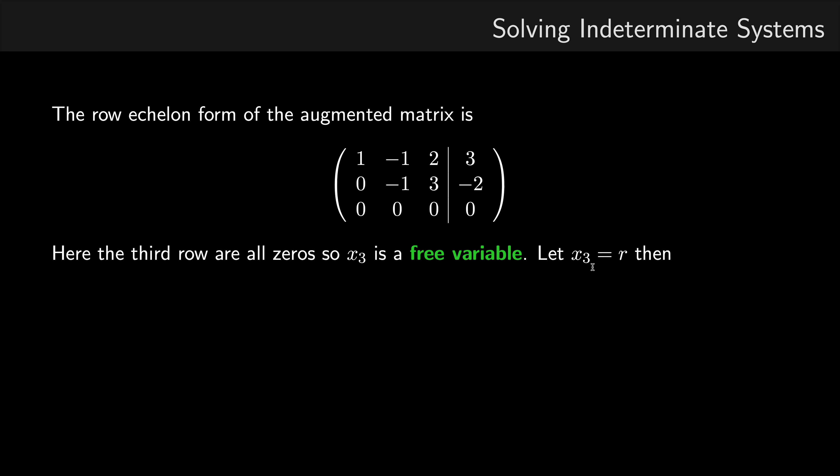So I'm going to let x3 be equal to r. Now r is just a parameter, it's nothing special. It's common to use r, s, t as parameters. So if x3 is equal to r, if we solve the second row, here we have minus x2 plus 3 times x3. Well, of course, we're letting x3 be r, so it's 3r, and that's equal to minus 2. So if we rearrange to make x2 the subject, you can see that x2 is equal to 2 plus 3r.